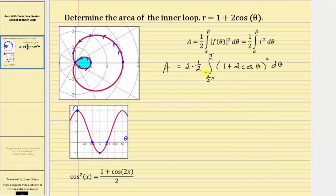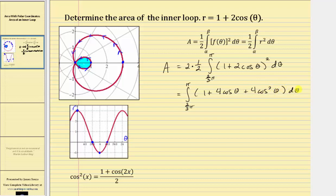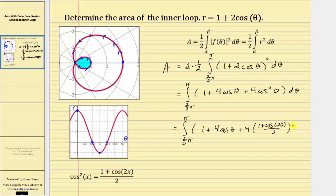And now let's find the area. Two times one half is equal to one, giving us the integral from two thirds pi radians to pi radians. Now we need to square one plus two cosine theta, which gives us one plus four cosine theta plus four cosine squared theta. And now we'll use a power reducing formula for cosine squared theta, where cosine squared theta equals the quantity one plus cosine two theta divided by two. Performing the substitution gives us the integral from two thirds pi to pi radians of one plus four cosine theta, plus four times the quantity one plus cosine two theta, divided by two, d theta.